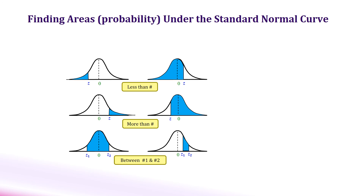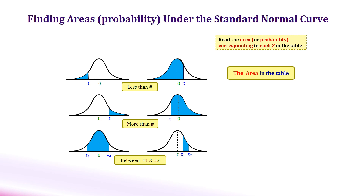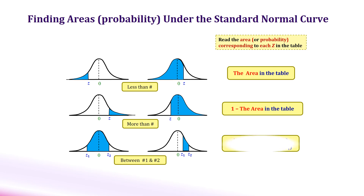We looked at three types of examples: finding the left area, right area, and the between area. In any case, we have to look up the table to find the left cumulative area corresponding to z-scores. Keep in mind that our z-table always gives the left cumulative area. For finding the left area, the table area is our desired area. For finding the right area, our desired area is 1 minus the table area. For finding the between area of two z-scores, it is the larger area with the larger z-score minus the smaller area with the smaller z-score. Please make sure to subtract areas, not z-scores.